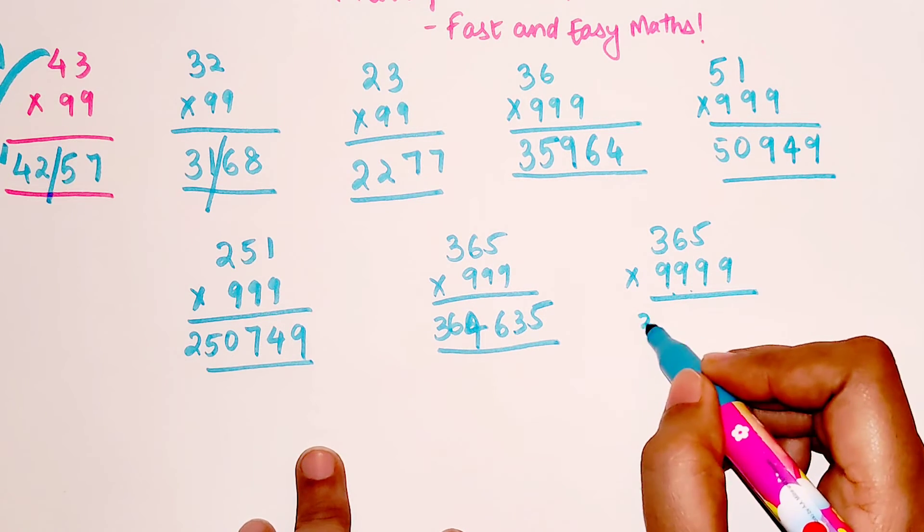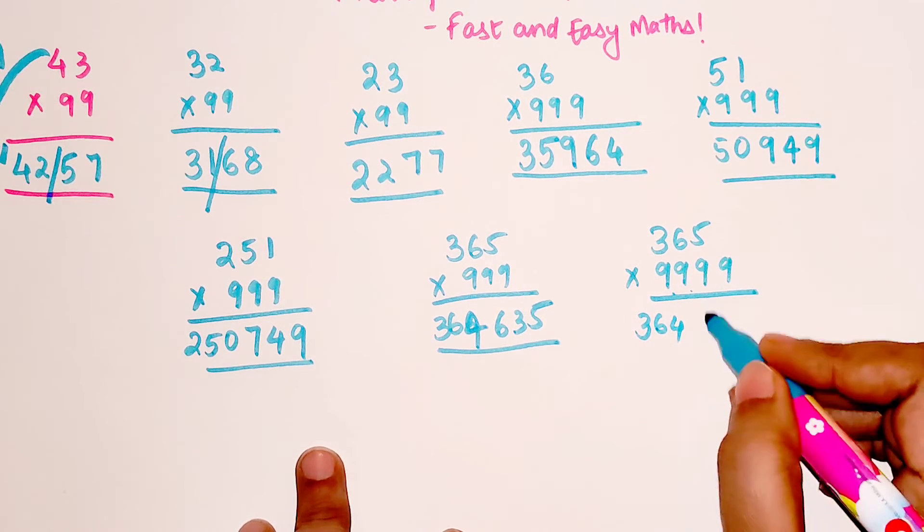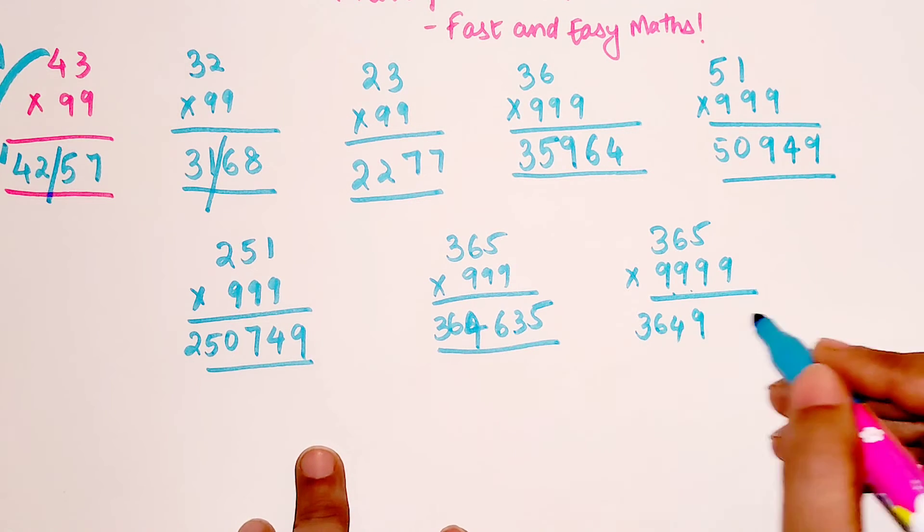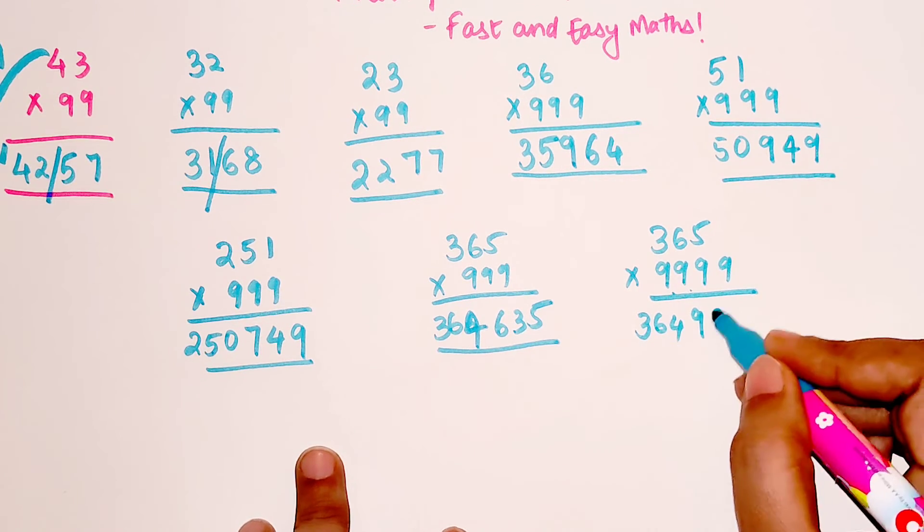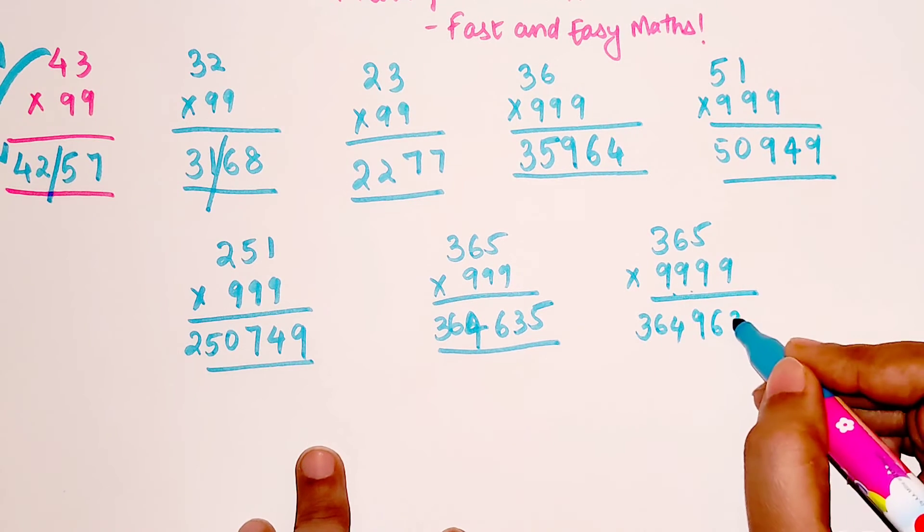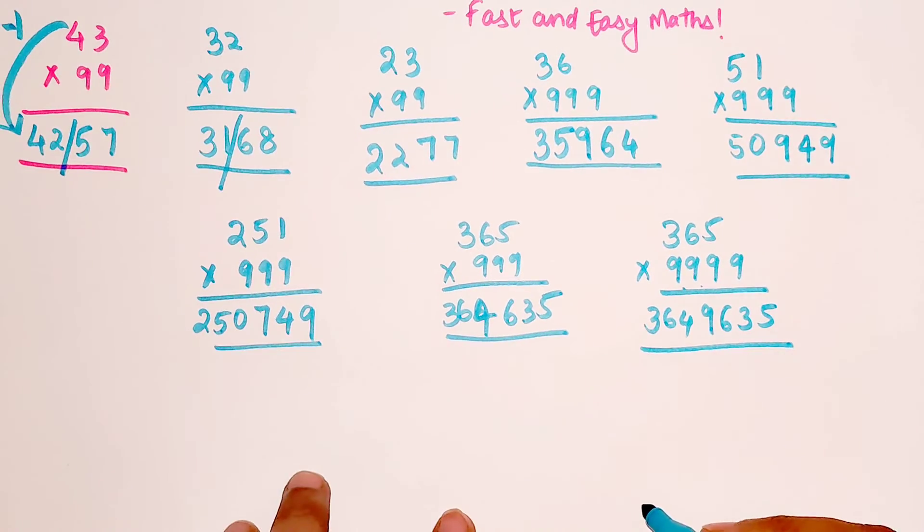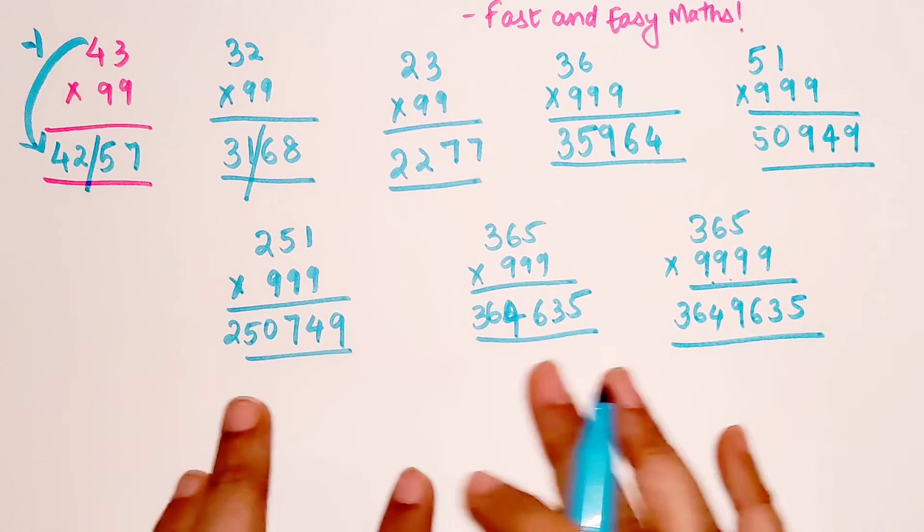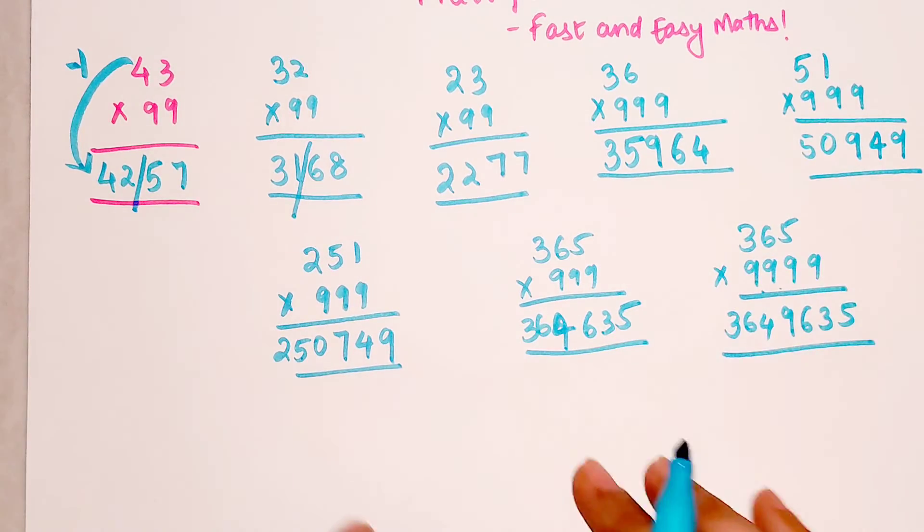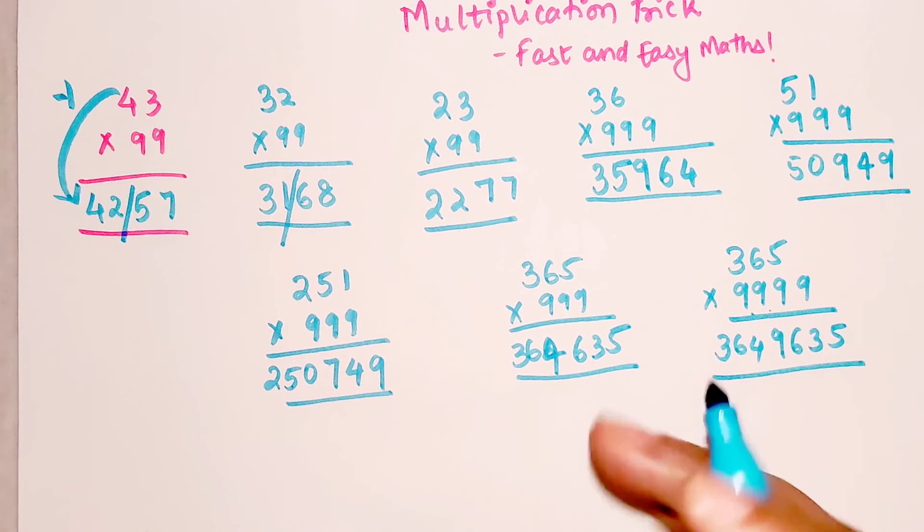So 3 plus 6 gets me 9, 6 plus 3 gets me 9, and 4 plus 5 gets me 9. So that is your answer. I hope you all are getting the way these things are working.